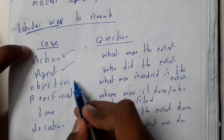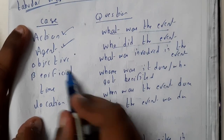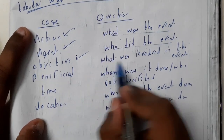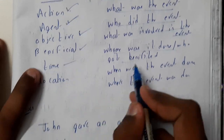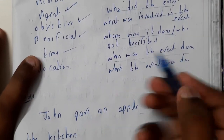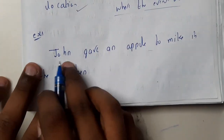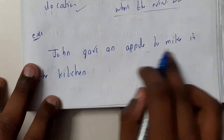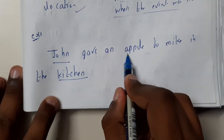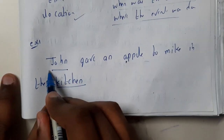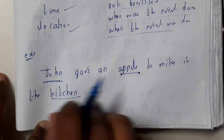These are the popular cases: Action — what event occurred; Agent — who did it; Objective — what it included; Beneficiary — who got benefited; Time — when it happened; Location — where it happened. For example: 'John gave an apple to Mike in the kitchen.' We have a location, an agent, and an object in this sentence.